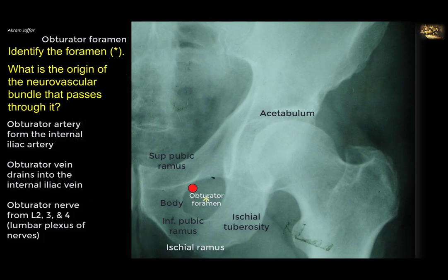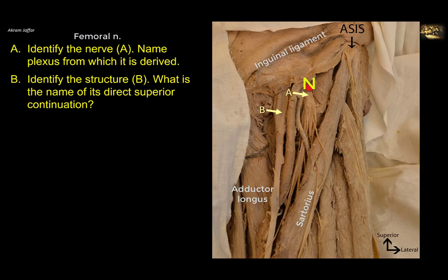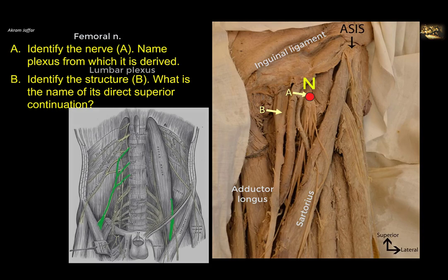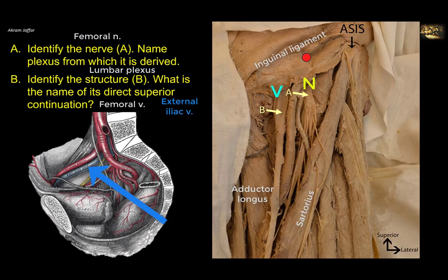Identify nerve A and name the plexus from which it is derived. This is the femoral triangle showing the inguinal ligament connecting the anterior superior iliac spine and pubic tubercle, with sartorius as the lateral boundary and adductor longus as the medial boundary. The femoral nerve, femoral artery, and femoral vein are the main structures. About 1–2 cm distal to the inguinal ligament, the femoral nerve breaks up into a tuft of small branches. It is a branch of the lumbar plexus from L2, L3, and L4 — posterior divisions. Structure B is the femoral vein, which continues superiorly as the external iliac vein, just as the femoral artery continues from the external iliac artery distal to the inguinal ligament.